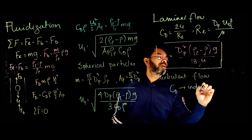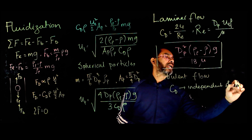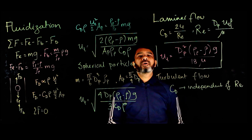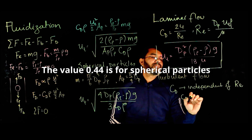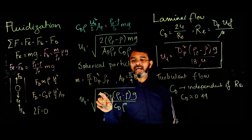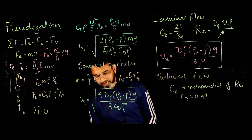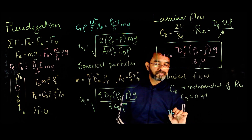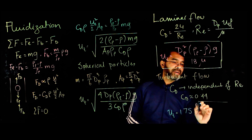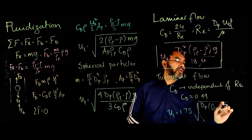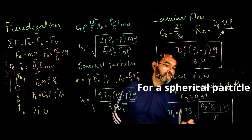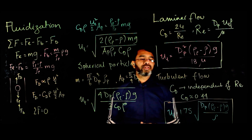For turbulent flow, C_D becomes independent of the Reynolds number and is approximately constant at 0.44 for a solid particle flowing through a fluid bed. Plugging this value into the equation and simplifying, the terminal settling velocity for turbulent flow is: u_t = 1.75 · √[d_p · (ρ_p − ρ) · g / ρ]. This is the expression for terminal settling velocity of a particle through a fluid bed when the flow is turbulent.